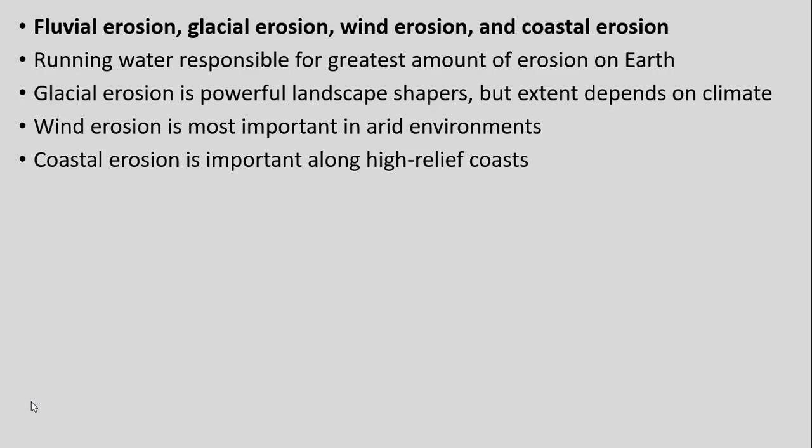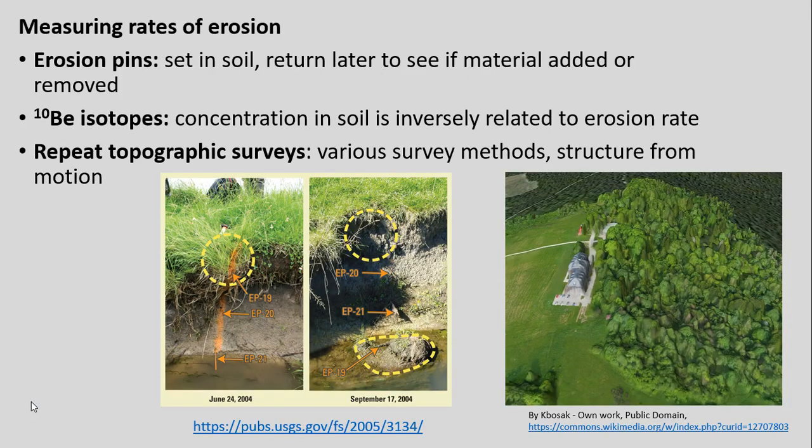Fluvial means running waters — things like rivers — and glacial erosion involves glaciers. There's also wind erosion and coastal erosion, which we won't really talk about to any extent within the course, though they are important in certain environments. Wind especially matters in arid environments, and coastal environments are really impacted by waves beating on the shores. We'll be talking more specifically about fluvial and glacial erosion in the coming lectures.